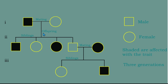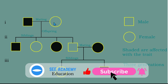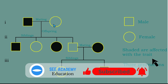Let me explain the standardized symbols. If you see a square, the square represents a male, and a circle represents a female. If a square or circle is shaded, that means whatever trait is being investigated is expressed or visible in that particular individual. If it is not shaded, the trait is not visible in that individual.